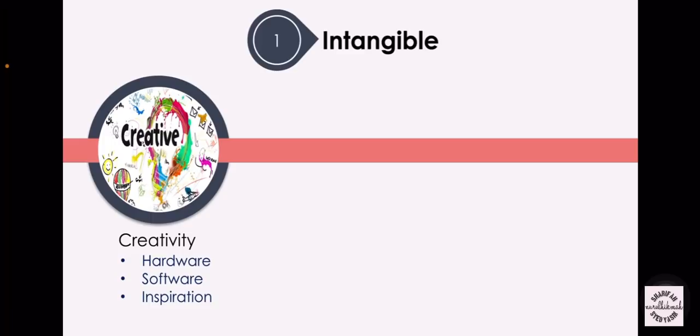The first intangible requirement for a project is creativity. In a multimedia project, being creative implies knowledge of hardware and software. The team also has to take inspiration from earlier experiments and industry standards to identify and add their own creative touches. This means the team has to do some research in a particular field in order to complete a multimedia project.